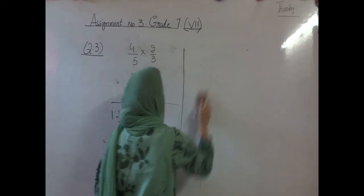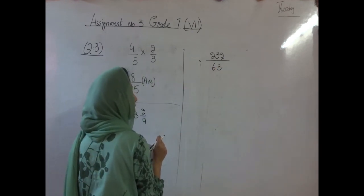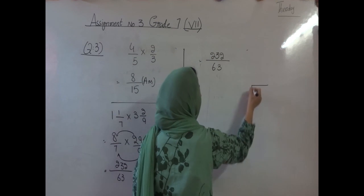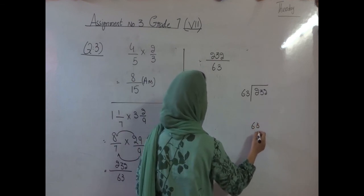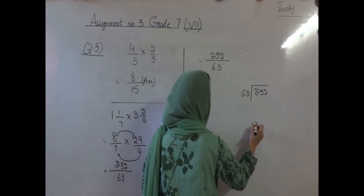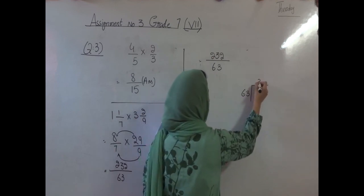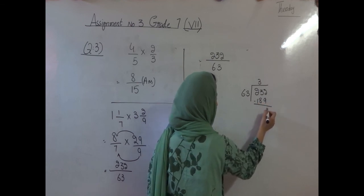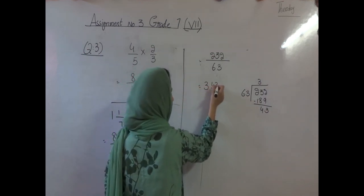Lowest form means we divide with the same table. It can be divided by the table of 3. Divide: what will be the answer? 63. Multiply with 3, then multiply with 4. So we multiply with 3. And 12 minus 9 is 3. 12 minus 8 is 4. So the answer will be 4 and 43 by 63.